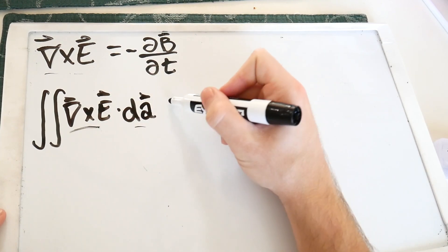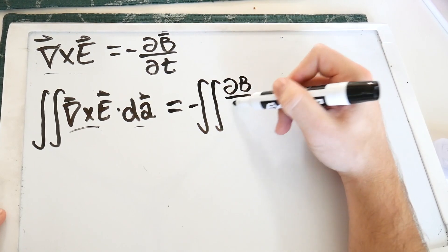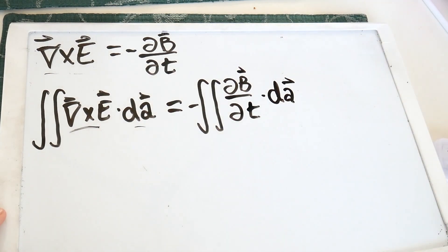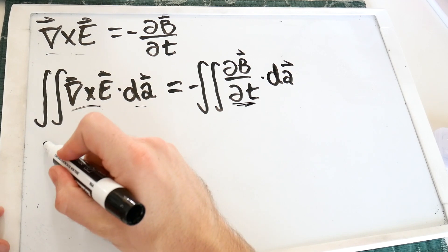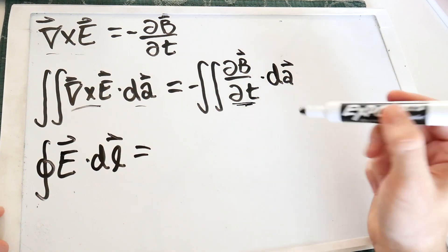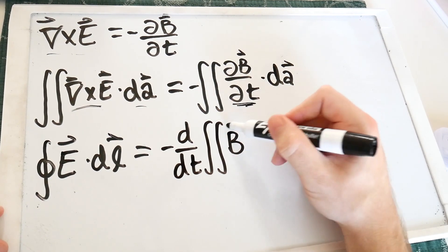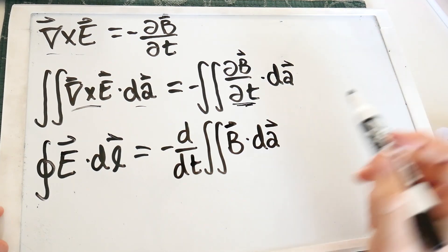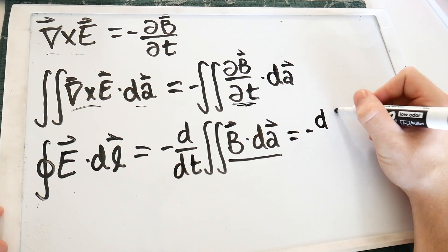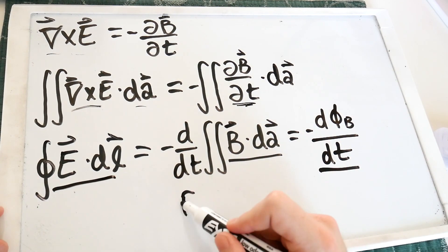We've got a vector dotted into a vector, so this is a scalar. This equals the 2D integral — with the negative out front — of dB/dt dotted into an infinitesimal area. Applying Stokes' theorem to the left-hand side rewrites it as the closed path integral of E dotted into an infinitesimal line element. We can pull the time derivative out as a total derivative, leaving us with the integral of B dotted into dA — the magnetic field through a patch of area, which is the negative time derivative of the magnetic flux. That's the second of Maxwell's equations: Faraday's law, which tells us a changing magnetic field generates an electric field.